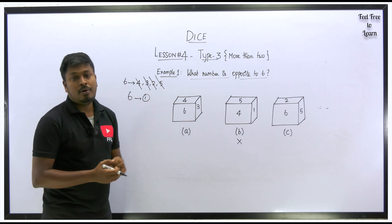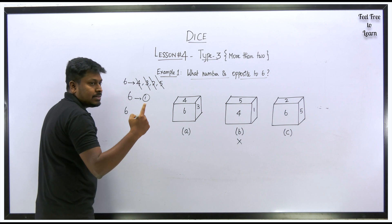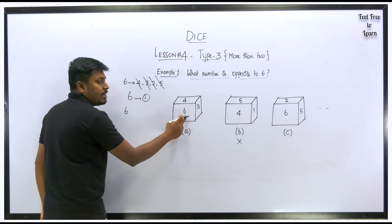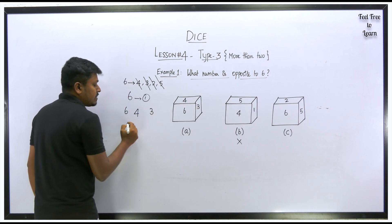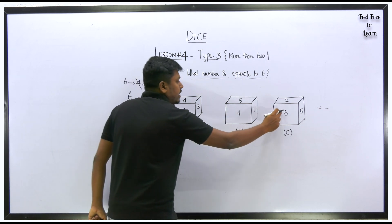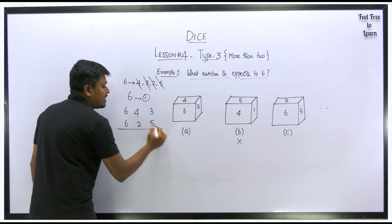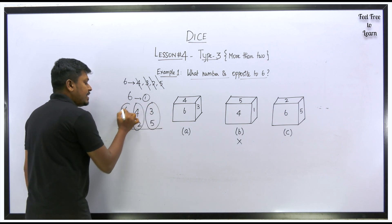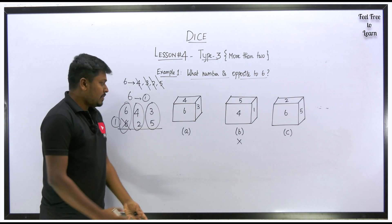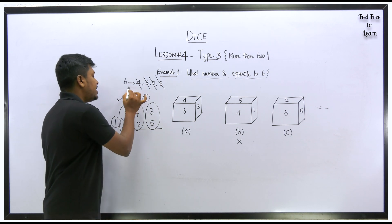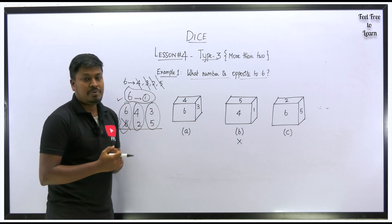We can also use the shortcut. Starting from the common number 6 in diagram A, write the remaining numbers in a clockwise direction: 4 and 3. In diagram C, starting from 6, write clockwise: 2 and 5. This tells us that 4 is opposite to 2, and 3 is opposite to 5, so 6 must be opposite to the remaining number, which is 1. Both methods confirm the same answer.